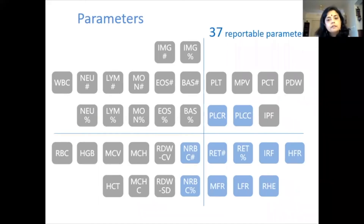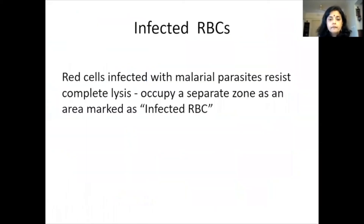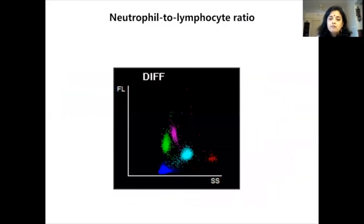Most modern analyzers have a large number of reportable parameters — as many as 37 — and also 48 research parameters. In this session, we will stick to the WBC series, as there are different sessions on RBC and platelets. The WBC series itself has many different parameters. Infected RBCs — where red cells infected with malaria parasites resist complete lysis and occupy a separate zone — are also included, with specific sessions on those topics to come.